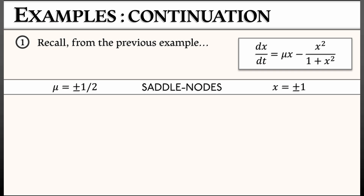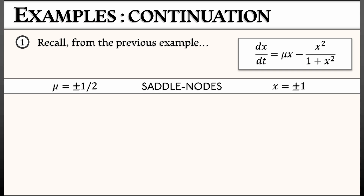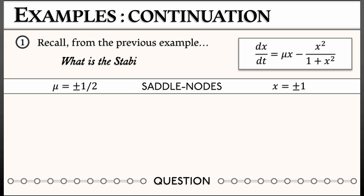These are saddle-node bifurcations. So we know we have a transcritical at x equals 0, mu equals 0, and saddle nodes at x equals plus or minus 1 and mu equals plus or minus 1/2 respectively. But there's still a question: what's the stability of these equilibria that are born in the saddle node?